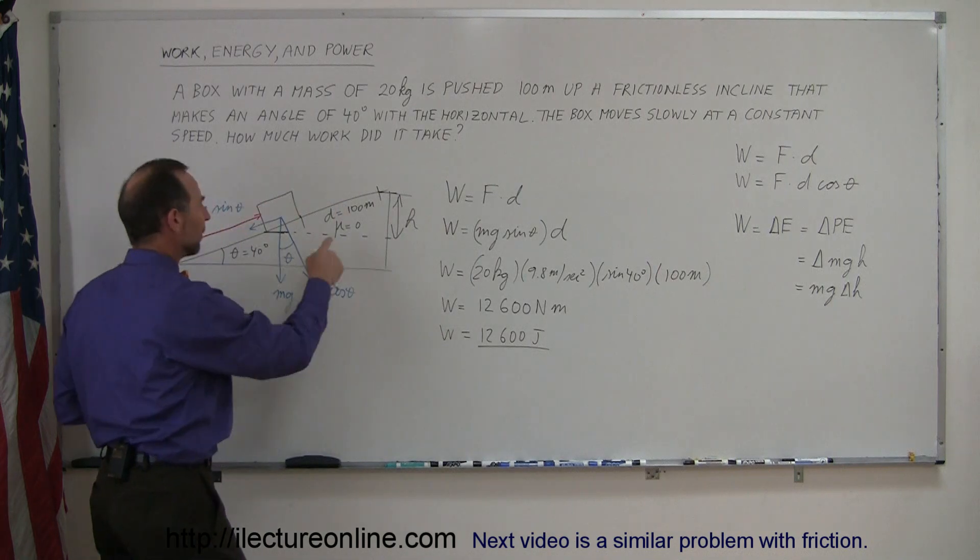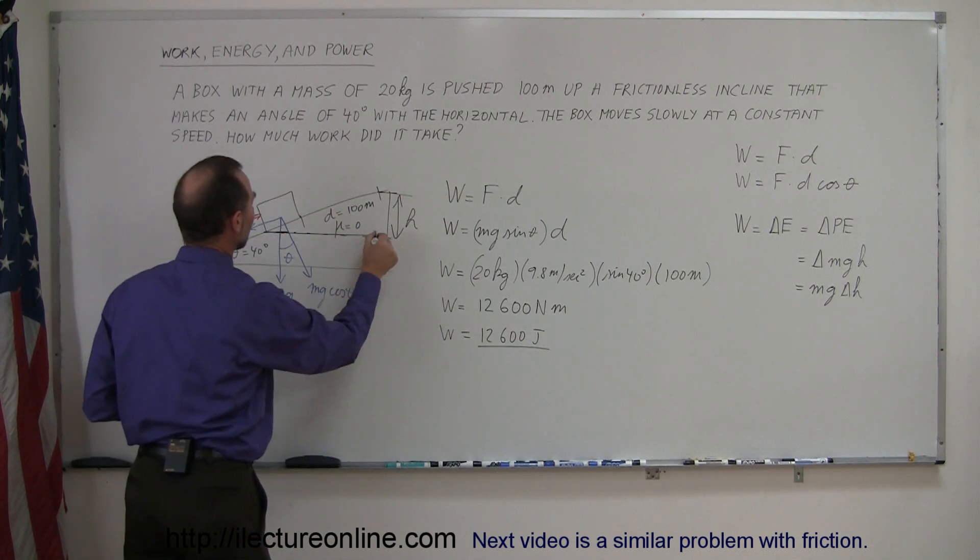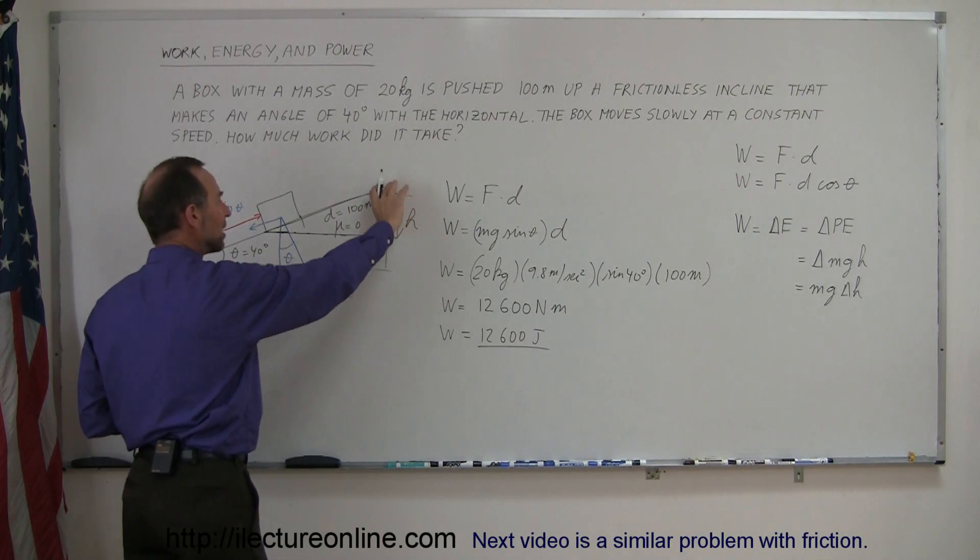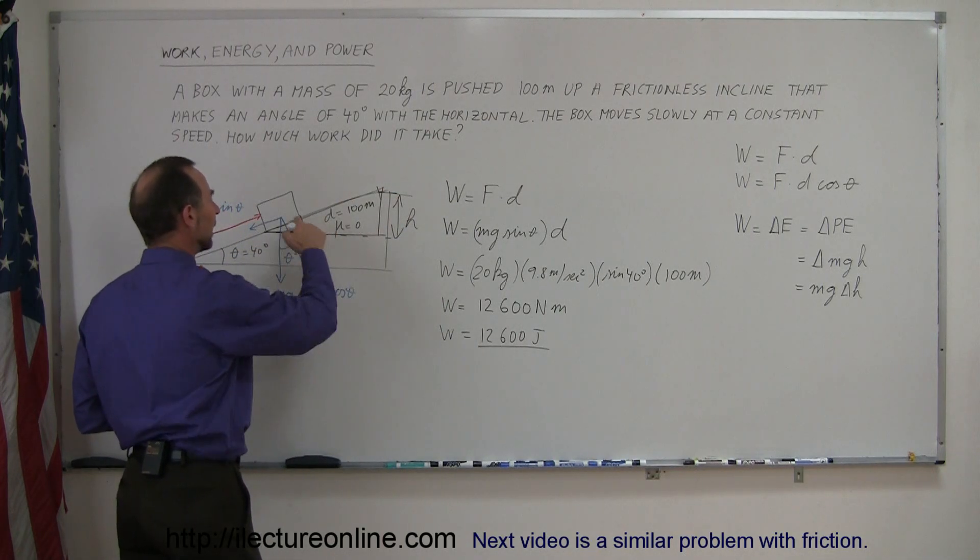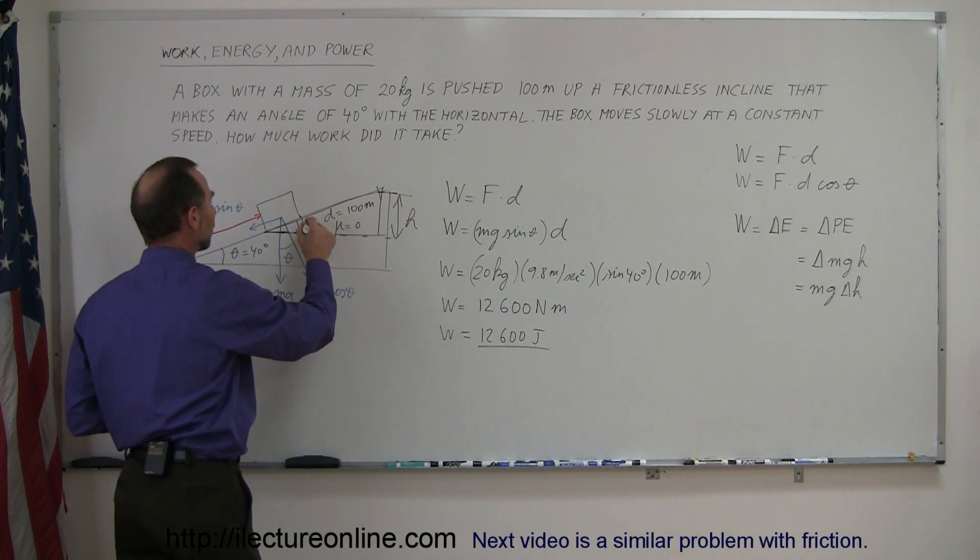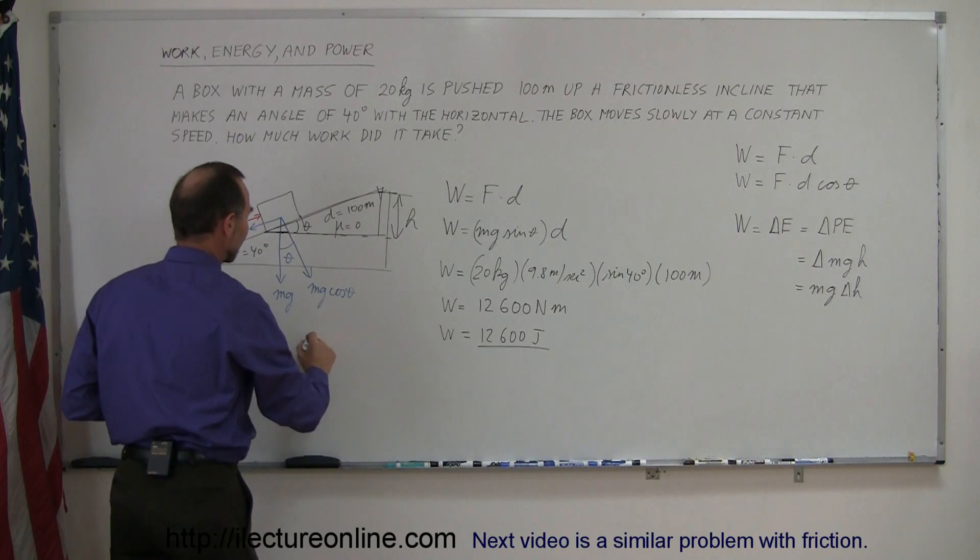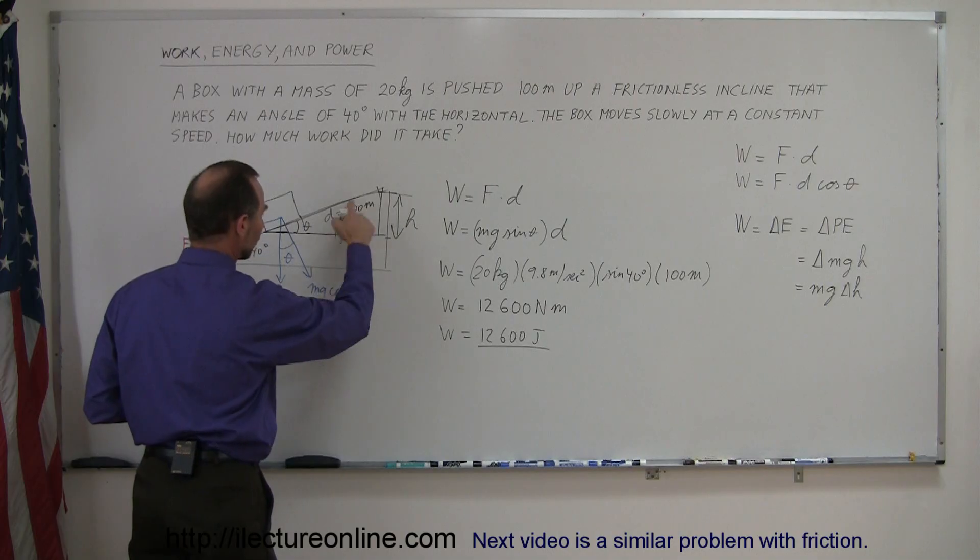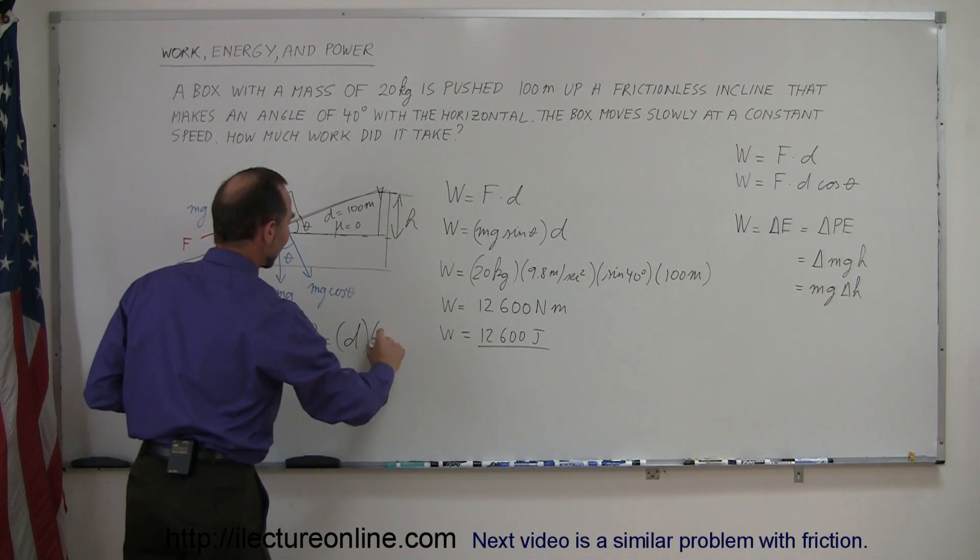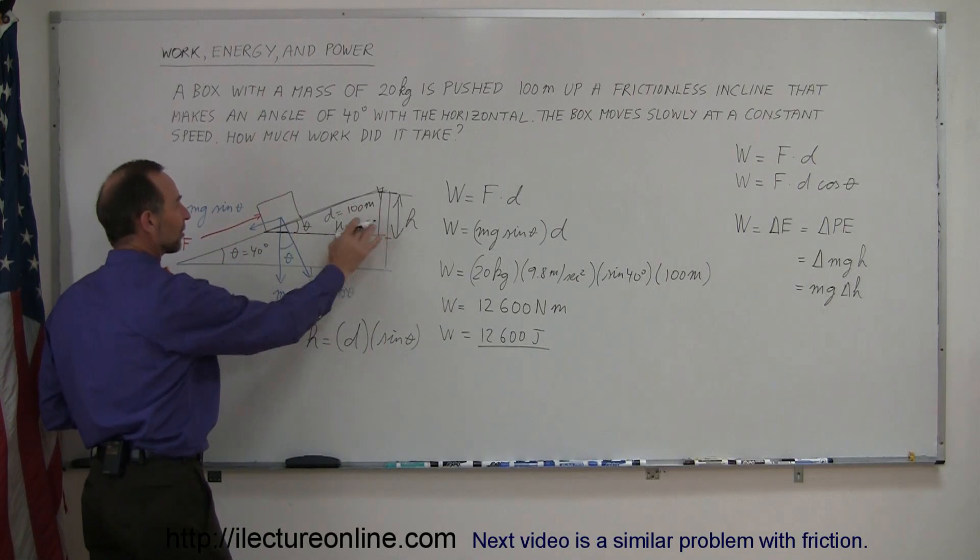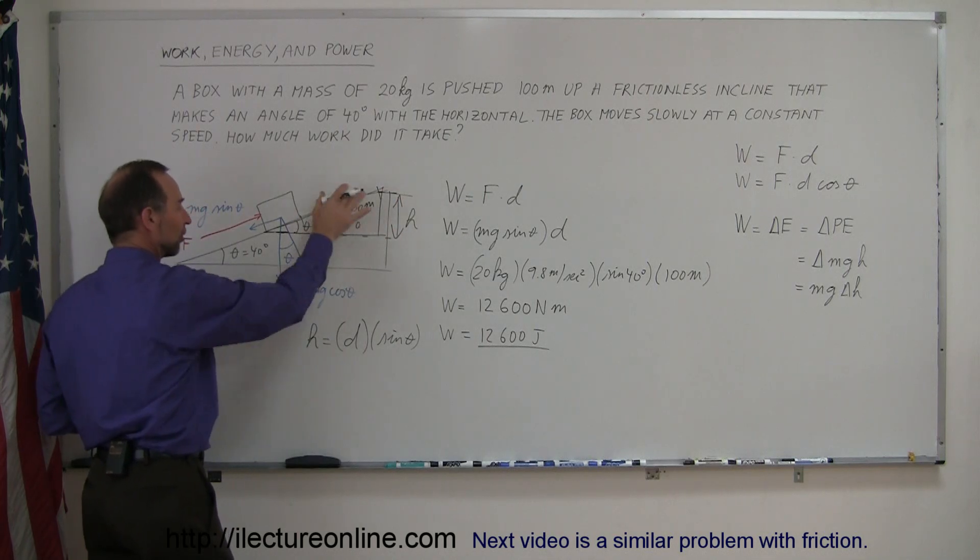So how much did the height change? If we look at this triangle, height is the vertical side of the triangle. The hypotenuse is the displacement. So using trigonometry, this being the angle theta, we can say that the opposite side h equals the hypotenuse, which is the displacement d, times sin θ. So the height gained is the displacement d times the sine of theta.